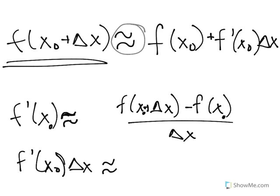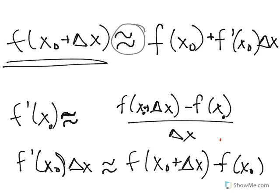And so we can just multiply both sides by delta x. And we can add f(x naught) to both sides as well. So plus f(x naught), this cancels out, here plus f(x naught).